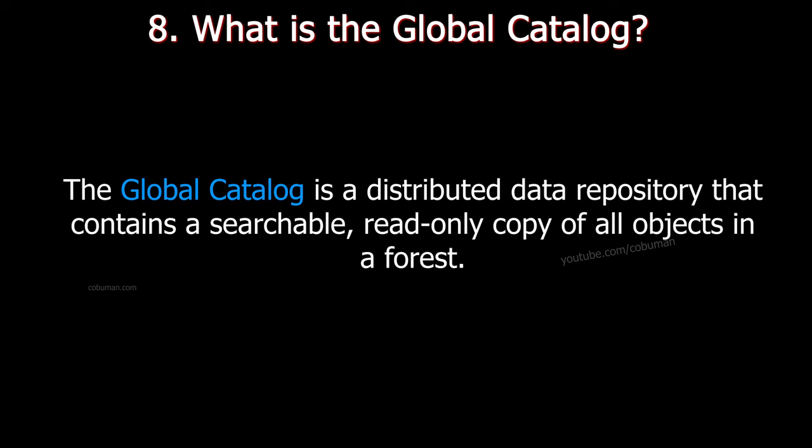Number eight: What is the global catalog? The global catalog is a distributed data repository that contains a searchable, read-only copy of all objects in a forest.